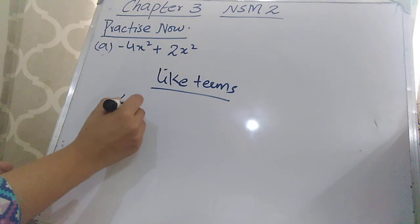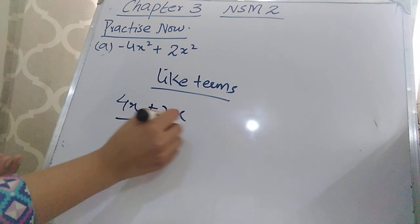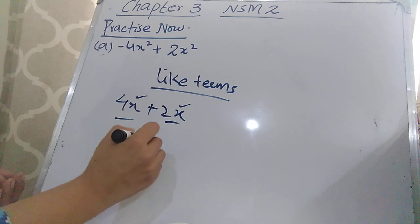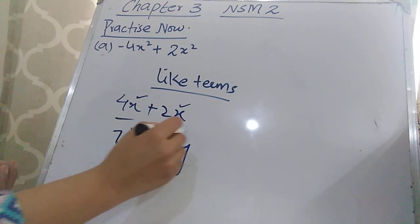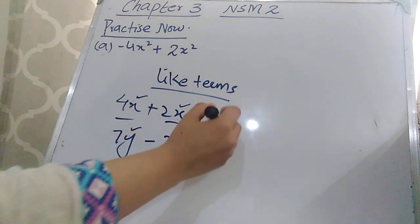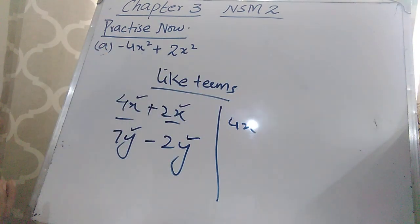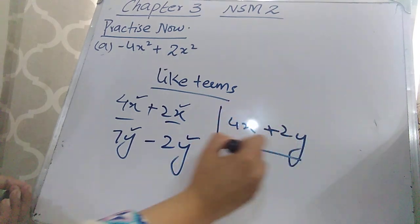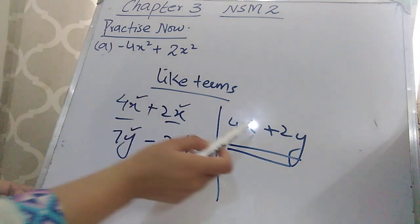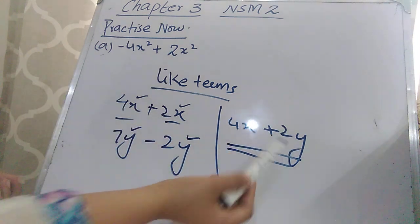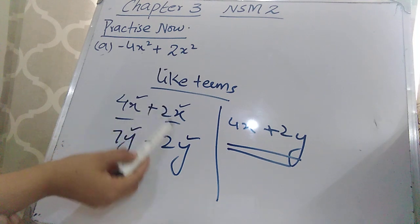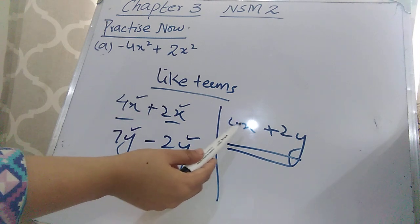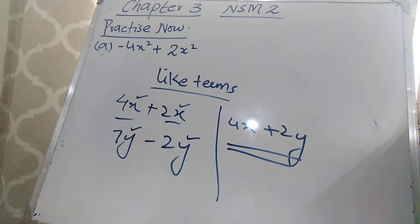You can solve 4x and 2x because both have the x variable. You can solve 7y and 2y because both have the same variable y. However, if the first term has x and the other has y, you cannot solve them — that is an unlike term because the variables are different. Like terms have the same variables; unlike terms have different variables.